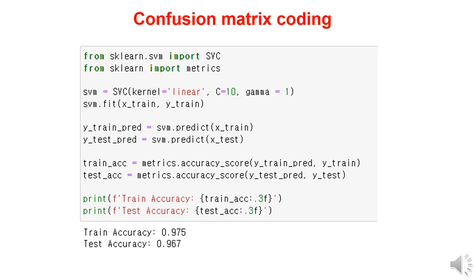To build the support vector machine model, import the SVC library. Create an SVM model with a linear kernel, C value of 10, and gamma value of 1, and store it in the SVM variable. Next, train the model using the X training and Y training data, and evaluate its accuracy. The accuracy is calculated for the training data and is found to be 97.5%. When the model is applied to the testing data, the accuracy is 0.967, indicating that the model correctly predicts the iris species with an accuracy of 96.7%.